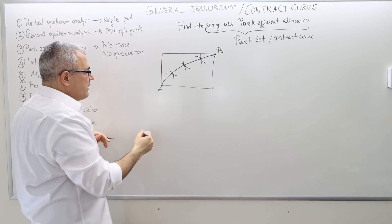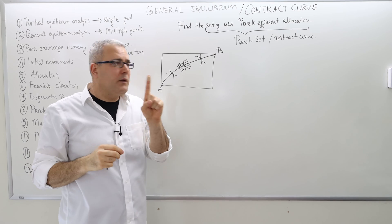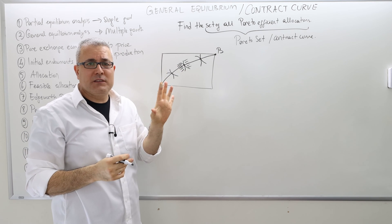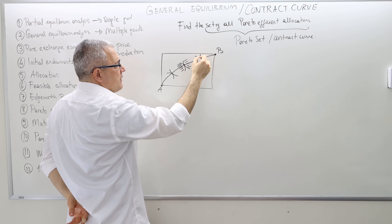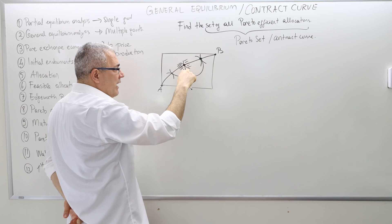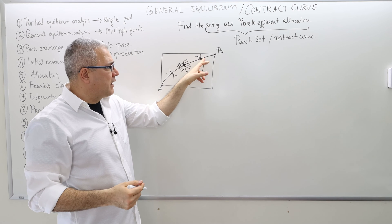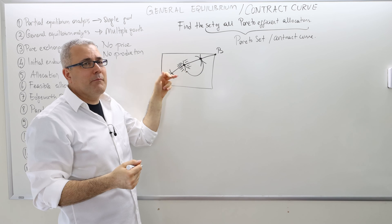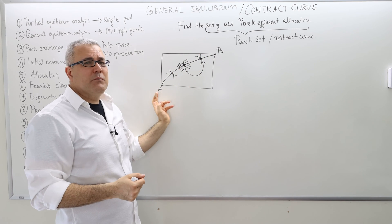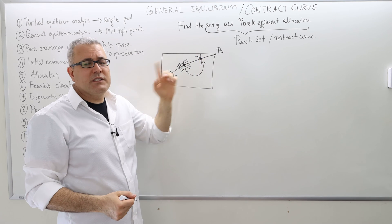Remember, the indifference curves being tangent means the better-than sets for agent A and B intersect at only one point — the point of tangency — and therefore mutual gain from trade at that point is not possible. If they are at one point on the contract curve and trade to another, it will make agent B happier but agent A worse off, since it's closer to his origin. So there is no win-win situation, and trade must stop.